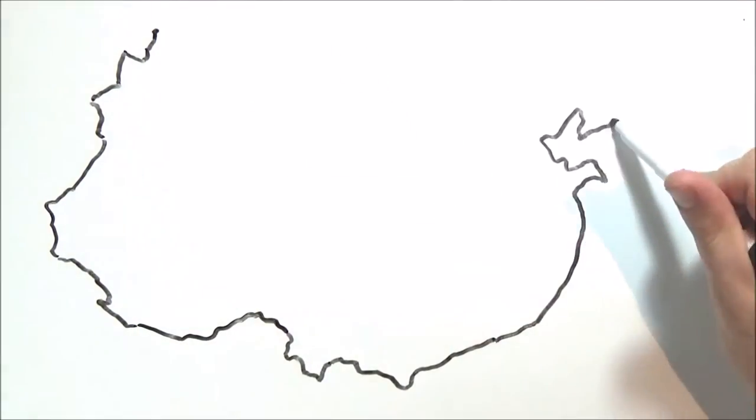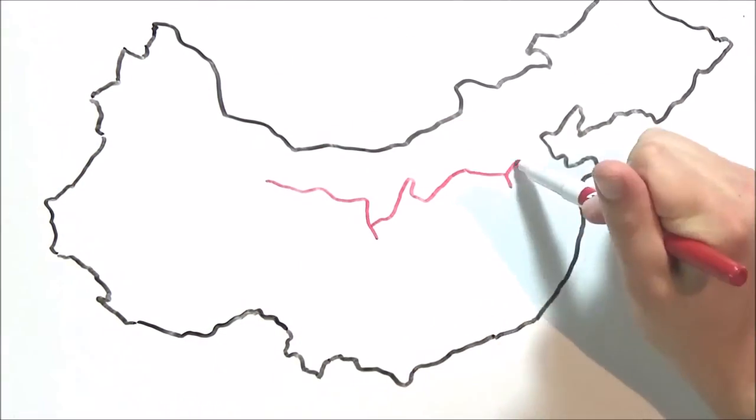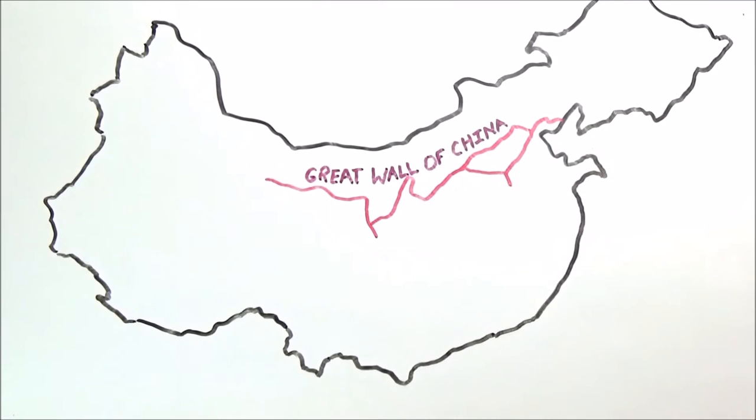The Great Wall of China is one of the seven wonders of the modern world and stretches over 6,000 miles. Its main construction took place around the year 1474 during the Ming Dynasty and its architecture continues to amaze people to this day.